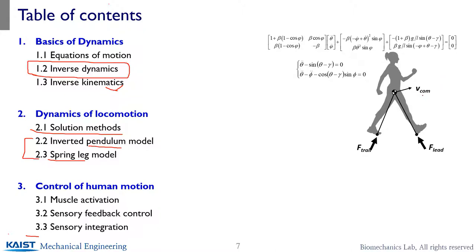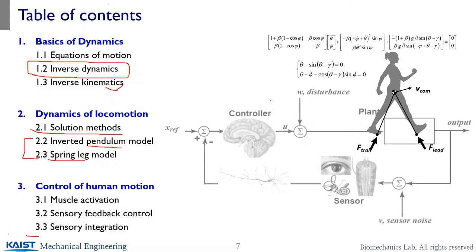However, for other human motions like balancing control or posture control, you need control. So in the last chapter, we are going to study how we can implement control disciplines to understand human motion that requires control. Most of the control, like feedback control, the control acts are generated by the muscle activation, which could take the role of an active actuator, and sensory feedback approaches will also be introduced.